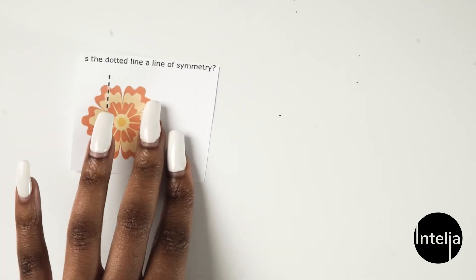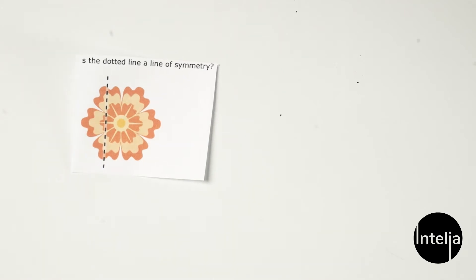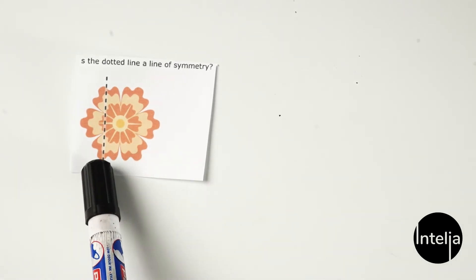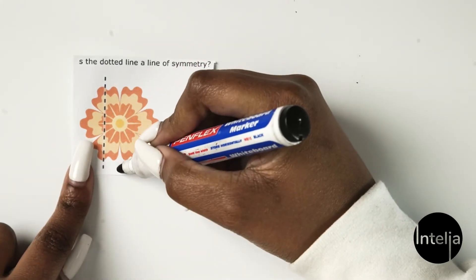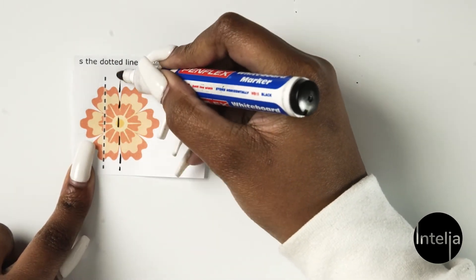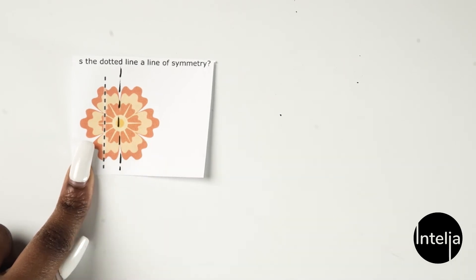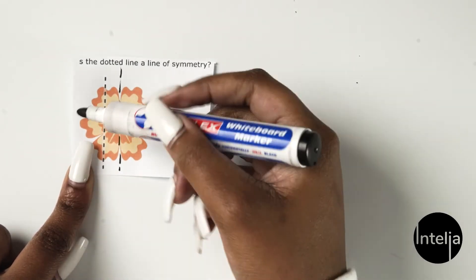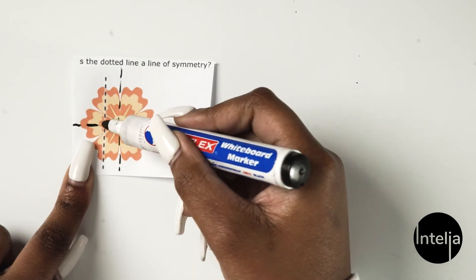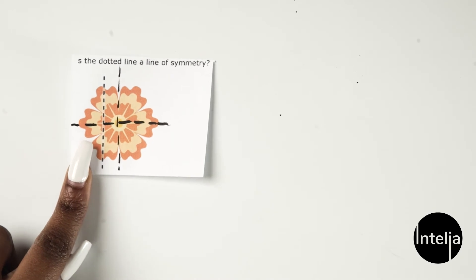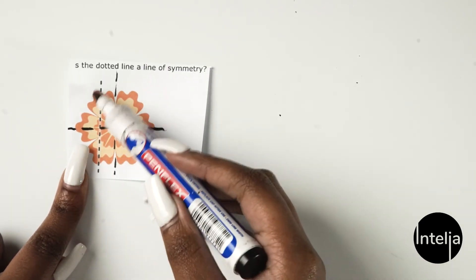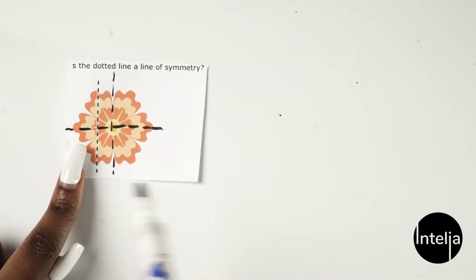Next, this is the flower, but the line of symmetry shown is not correct — the left does not look like the right, so it is not a line of symmetry. If the line was here, then the left would look exactly the same as the right. Or even if the line was here, the top would look exactly the same as the bottom. So in this instance, this is not a line of symmetry.